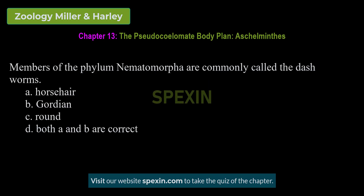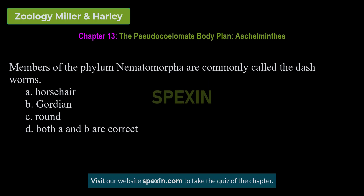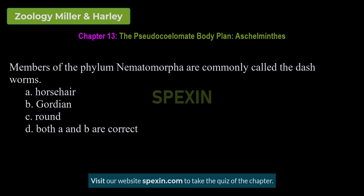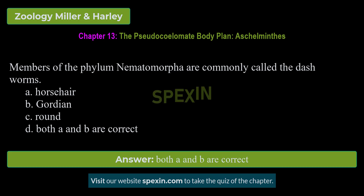Members of the phylum Nematomorpha are commonly called the dash worms. A. Horsehair. B. Gordian. C. Round. D. Both A and B are correct. Correct answer: Both A and B are correct.